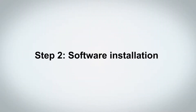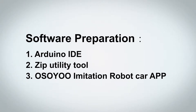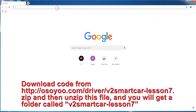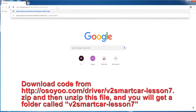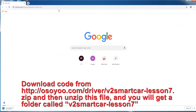Step 2: Software Installation. In this lesson, you will use Arduino IDE, a Zip Utility Tool, and the Osio Imitation Robot Car App. Download the code from Osio and then unzip the file, and you will get a folder called V2 Smart Car Lesson 7.